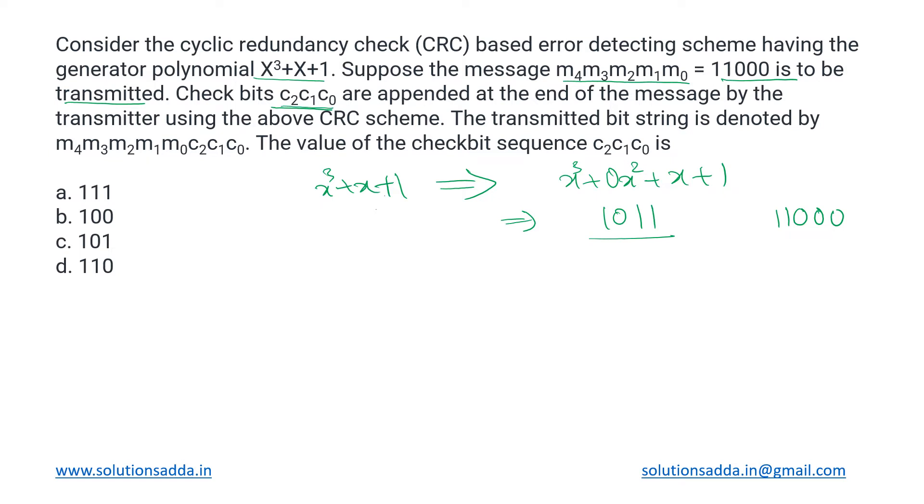The check bits to be appended in this message originally will be triple zero, and then we shall be performing the CRC mechanism on that to generate the actual check bits c2, c1, and c0. They are to be determined—what exactly has to be appended at the end of this message before transmitting it.